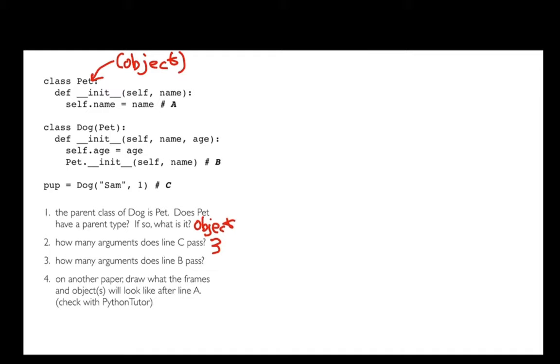The next question: how many arguments does line B pass? When I'm calling this here, there'd be two there and you might naturally think this thing is going to be passed in as well, but it's not. The reason is that pet is a class, not an object. If it were an object, then pet would go into that receiver variable. It's not. So self here will go to self there and the name will go to here.